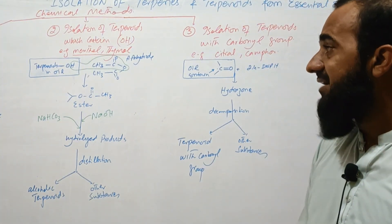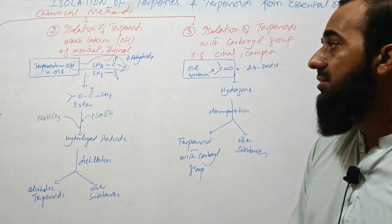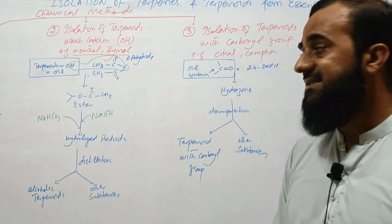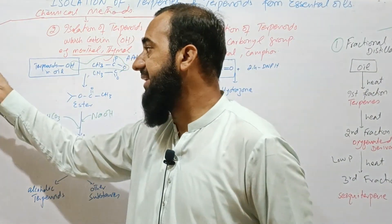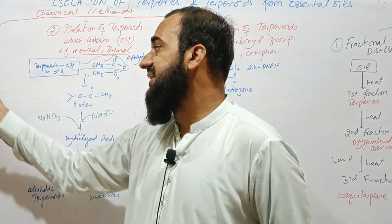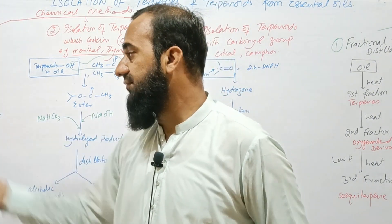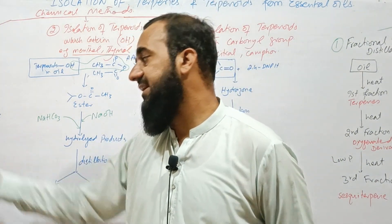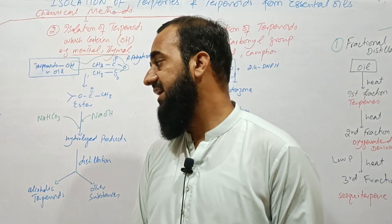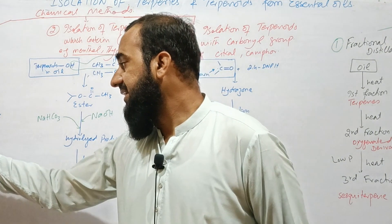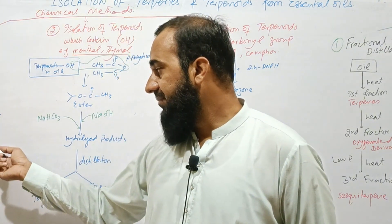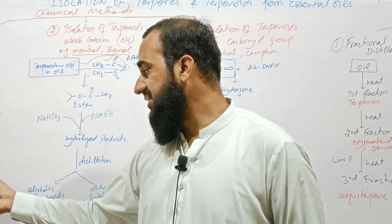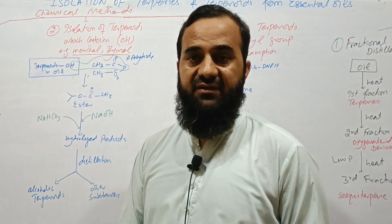The essential oil may contain terpenes or terpenoids. In the first chemical method, isolation of terpenes, the essential oil is treated with nitrosyl chloride in the presence of chloroform. Nitrosyl chloride forms an adduct with terpene due to the presence of a pi bond, as there is no functional group present. The adduct is obtained in the form of crystals. The mother liquor is separated and this crystalline substance undergoes distillation, and terpenes are separated from the mixture.